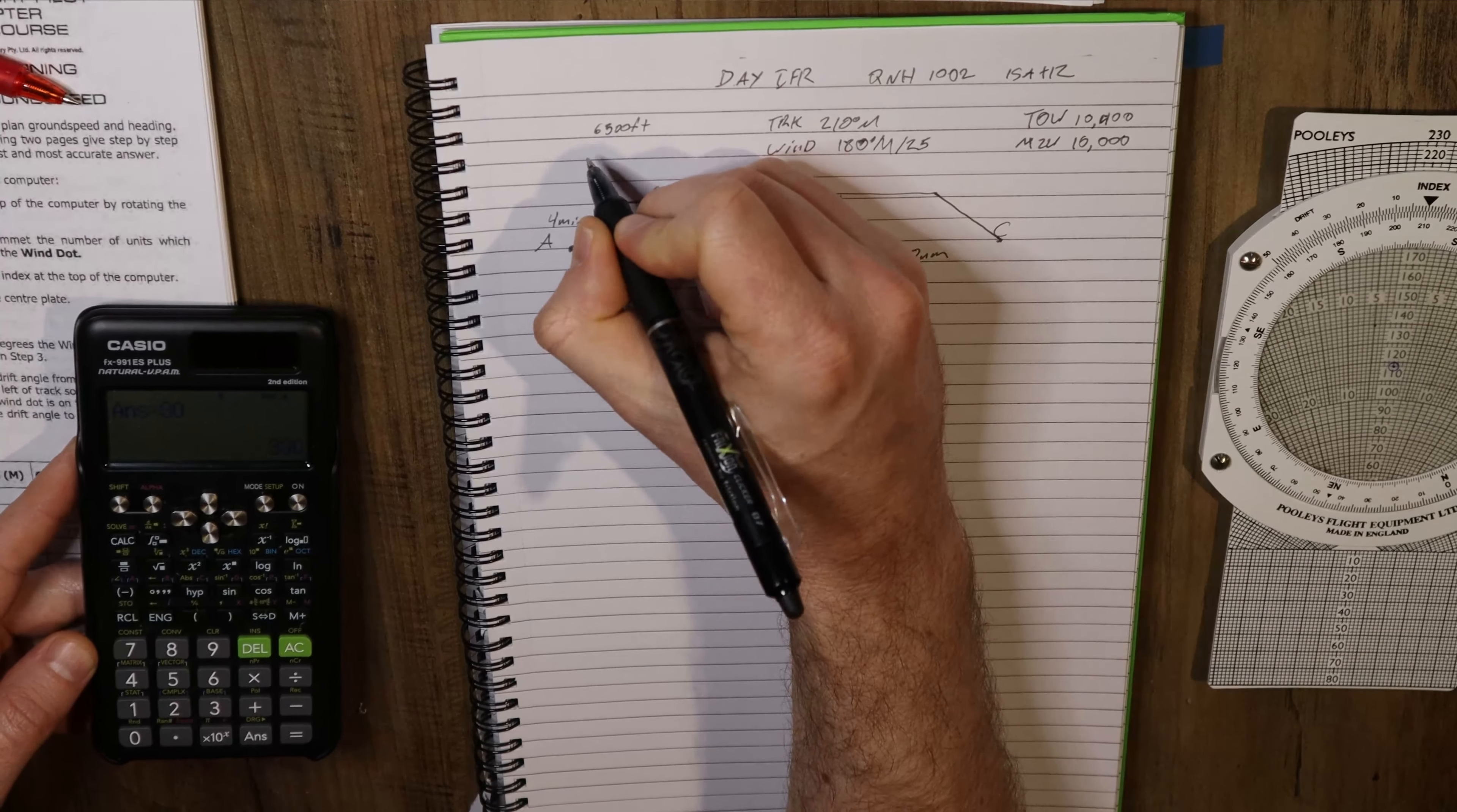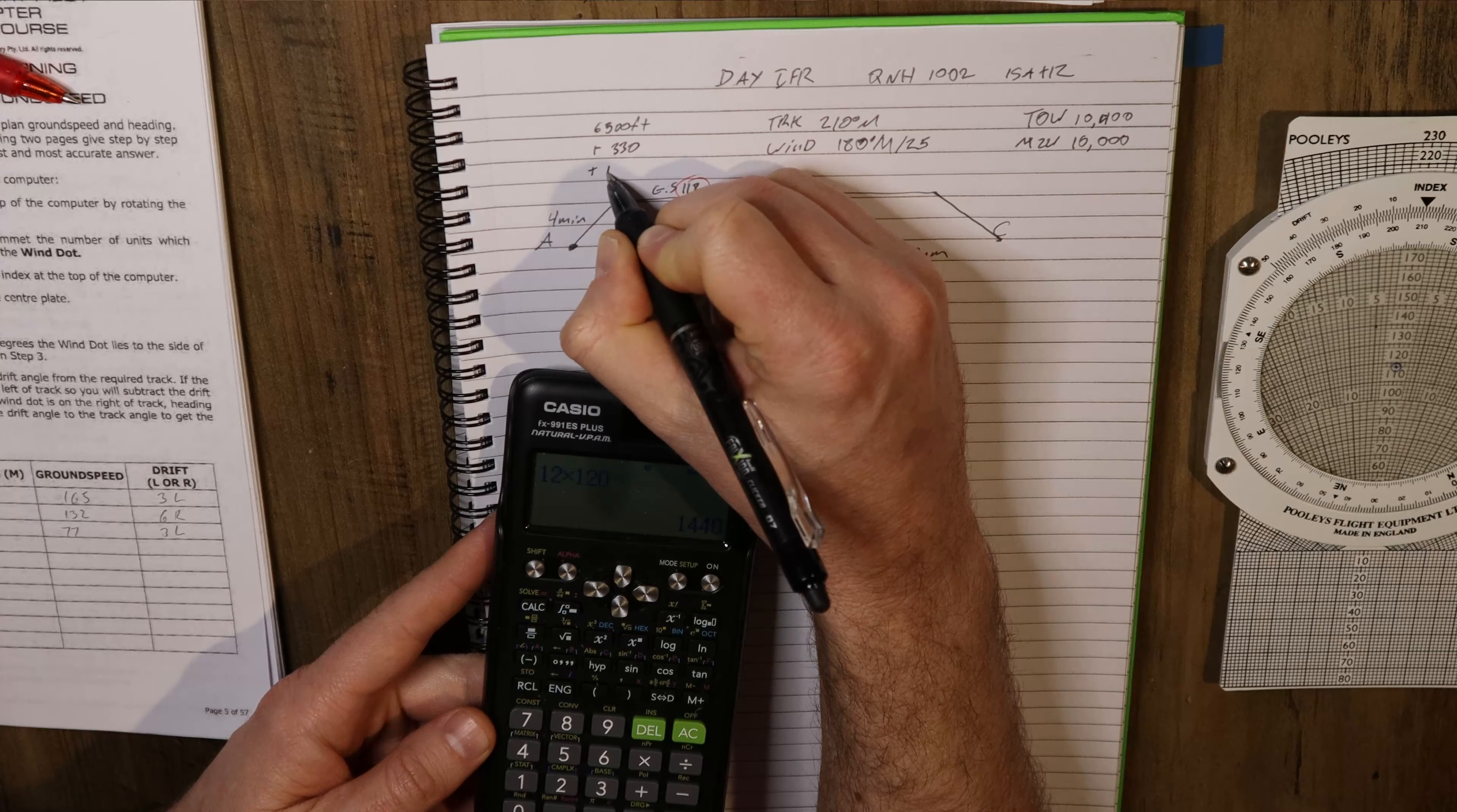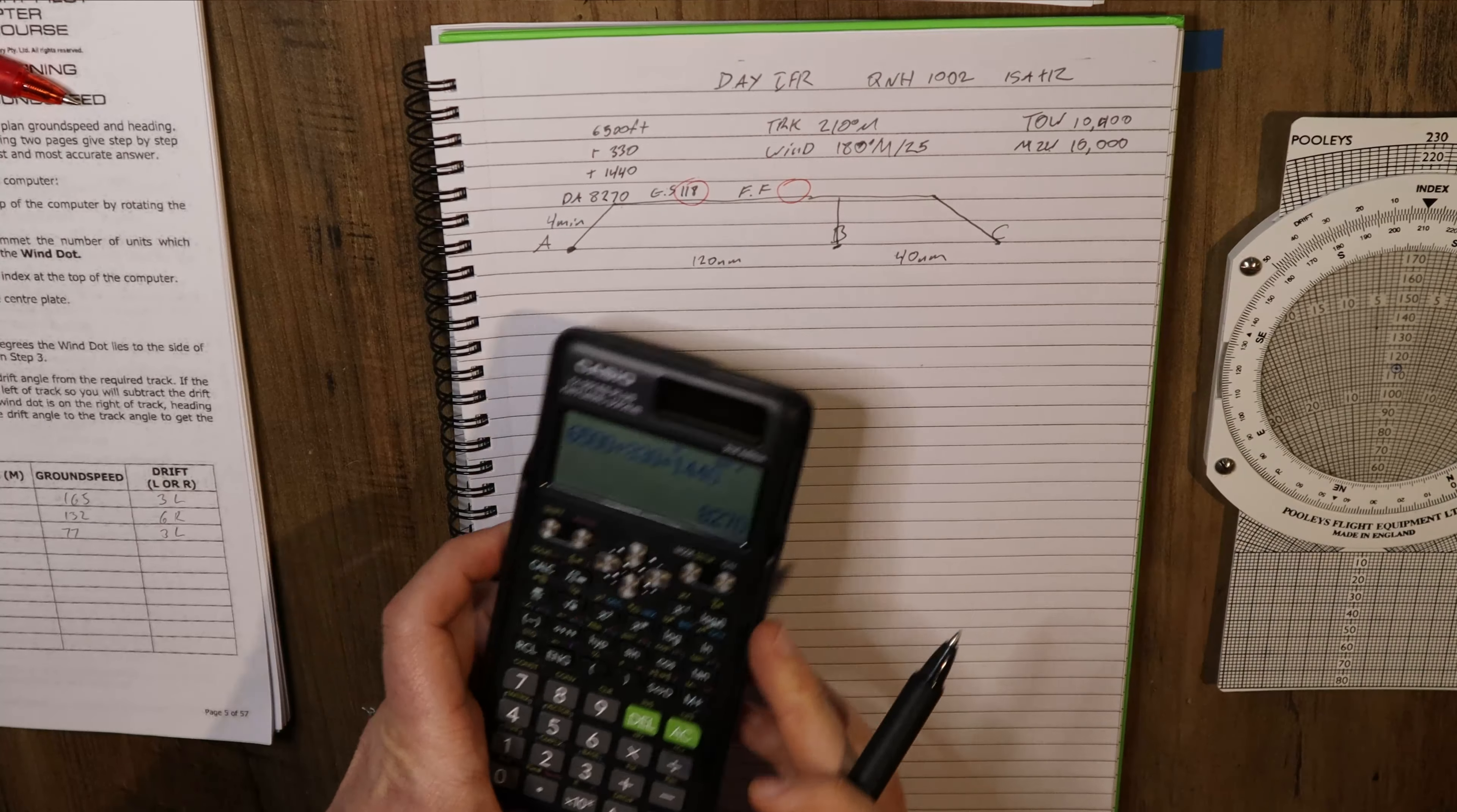Now temperature is ISA plus 12, so we're going to go 12 times 120, giving us 1440 feet. And again, it's a higher temperature, that's worse for us. We find that higher up. So our DA is 8270 feet. Now that we've got our mid-zone weight and our DA, we can figure out our fuel flow.